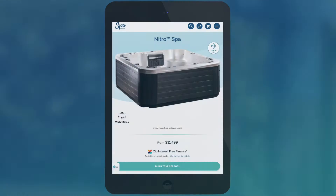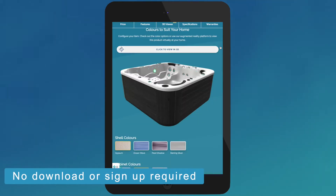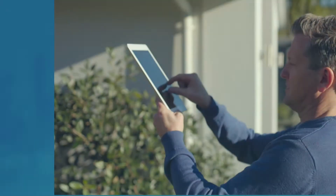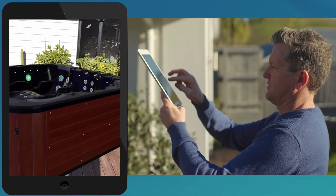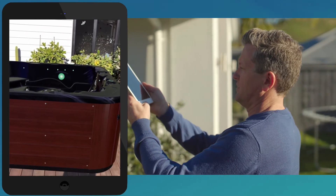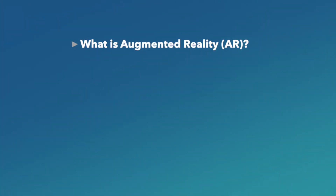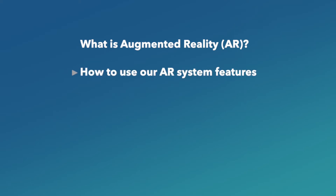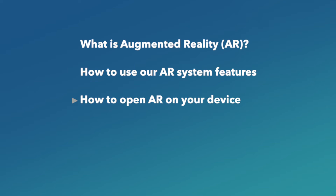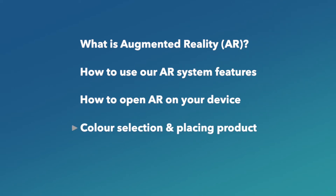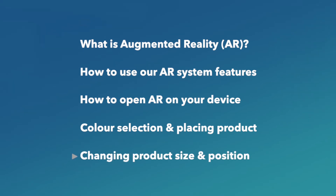Hi, I'm Jay from Spa World. And in this short video, I'm gonna show you how to use your smart device to bring a Spa World product to your home. Best of all, this easy-to-use, web-based AR system does not require you to download or install an application on your device. The system simply uses the camera on your mobile phone or tablet to scan your space, and then allows you to virtually place a Spa World product into the area you desire. By the end of this video, you'll know these five things: what is augmented reality, also known as AR; how can you get the best out of our AR system; how do you open AR on your device; how to change the color and place a product; and how to change the product size and position.